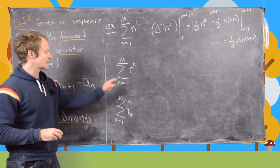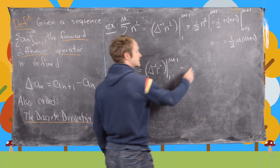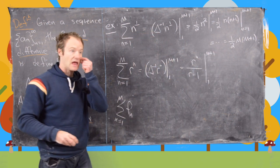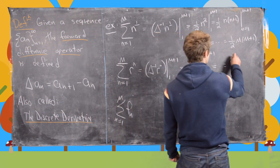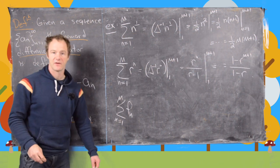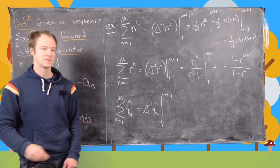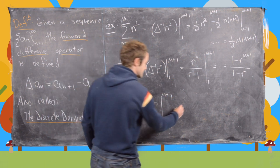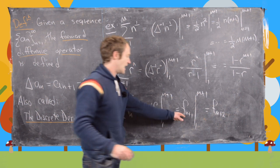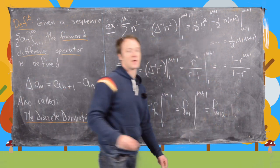Second: the sum of r^n equals the discrete antiderivative of r^n evaluated from 1 to m+1, which is r^n/(r-1) evaluated there, giving (1 - r^{m+1})/(1 - r). Third: the sum of Fibonacci numbers — the discrete antiderivative shifts the index, so this is F_{n+1} evaluated from 1 to m+1, giving F_{m+2} minus F_2, and since F_2 = 1, we get F_{m+2} minus 1.